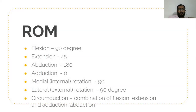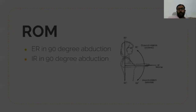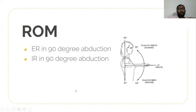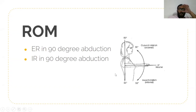External rotation is also 90 degrees. There is another range of motion — external rotation and internal rotation in 90 degrees of abduction. This is external rotation in 90 degrees abduction, and this is internal rotation in 90 degrees abduction. This concludes the normal applied anatomy and range of motion of the shoulder joint. Thank you.